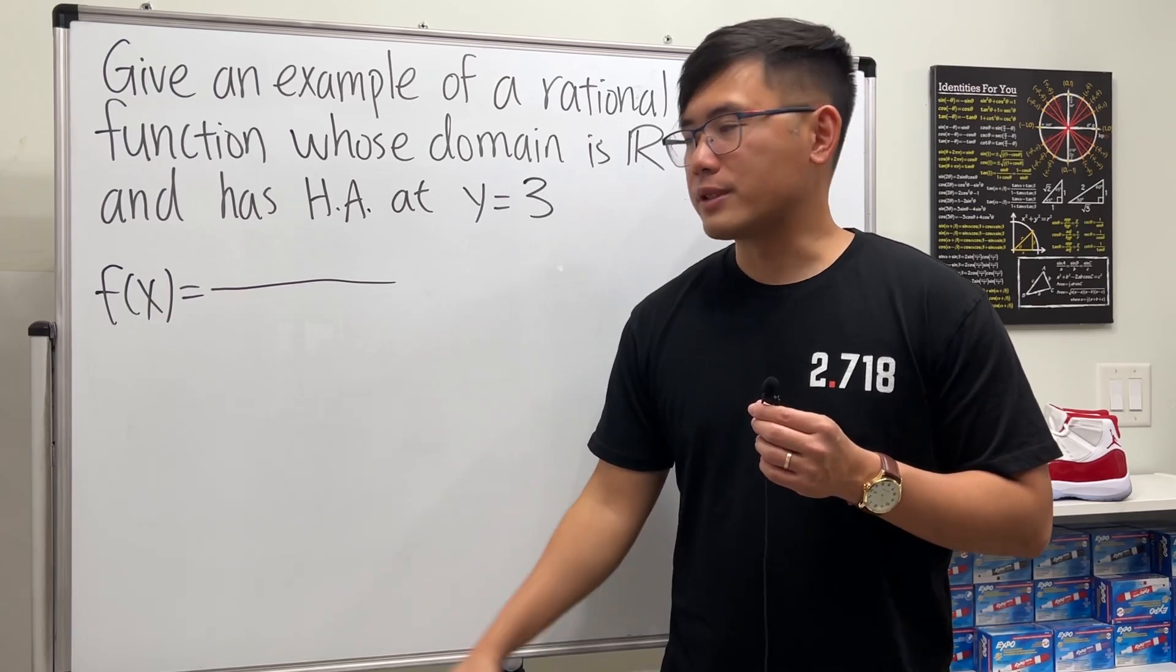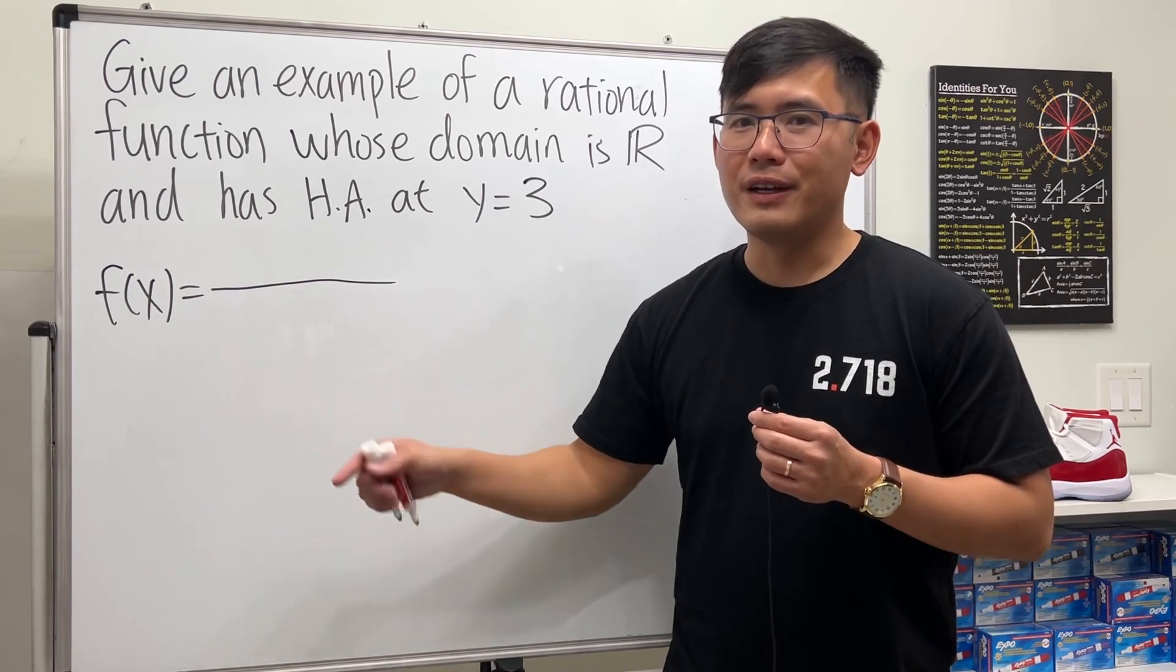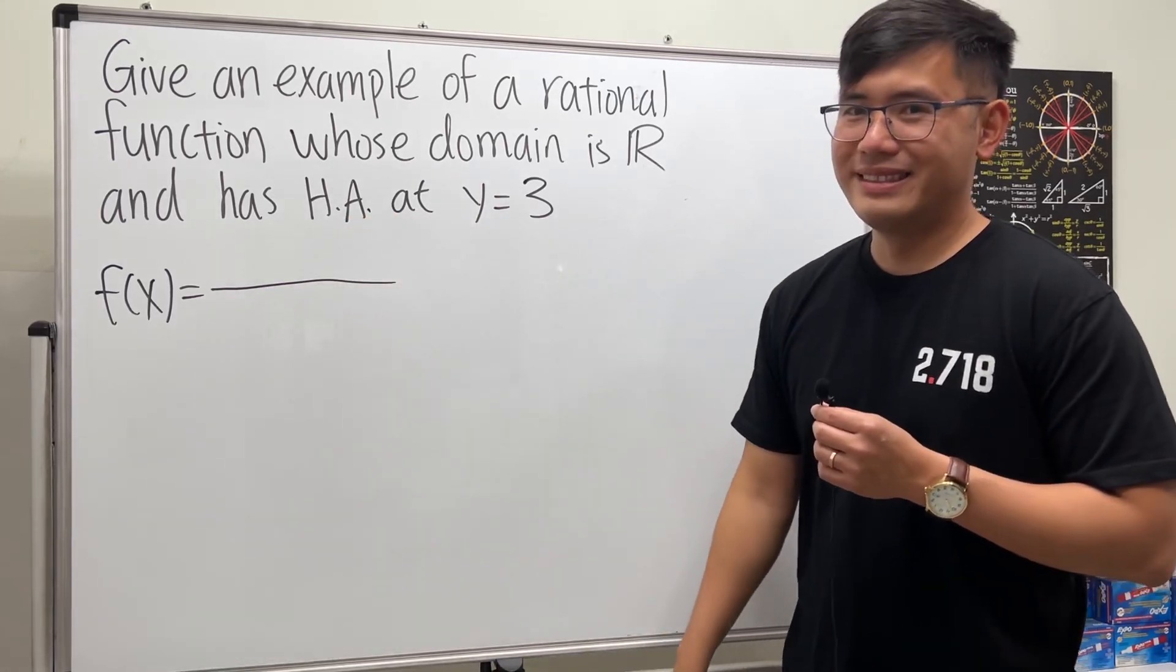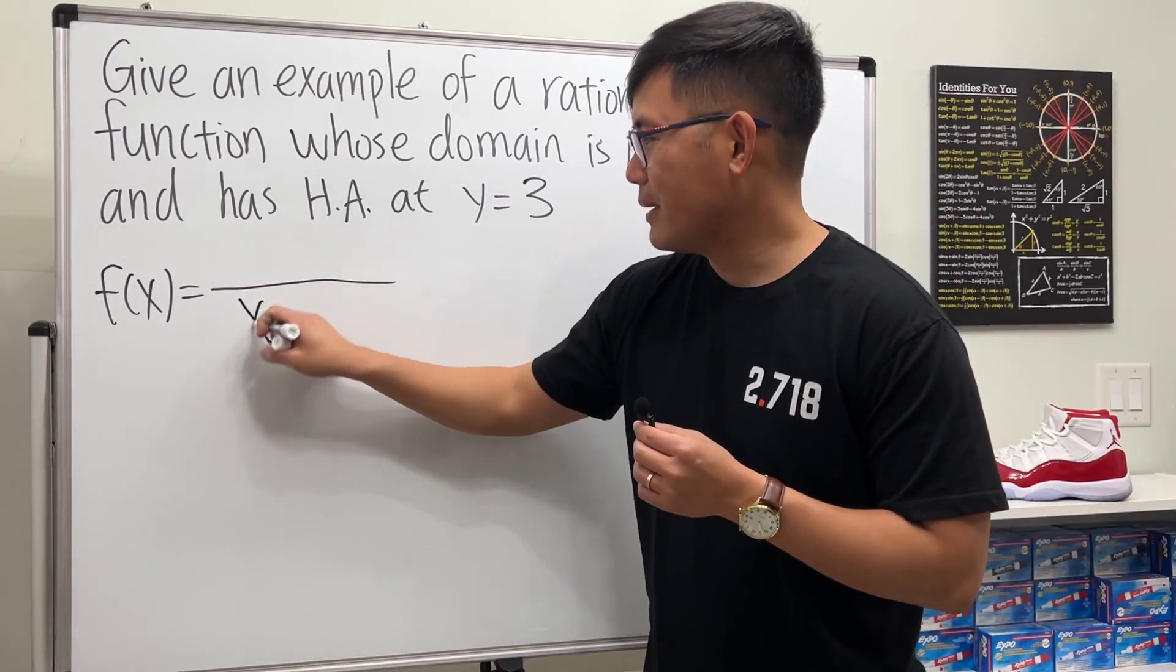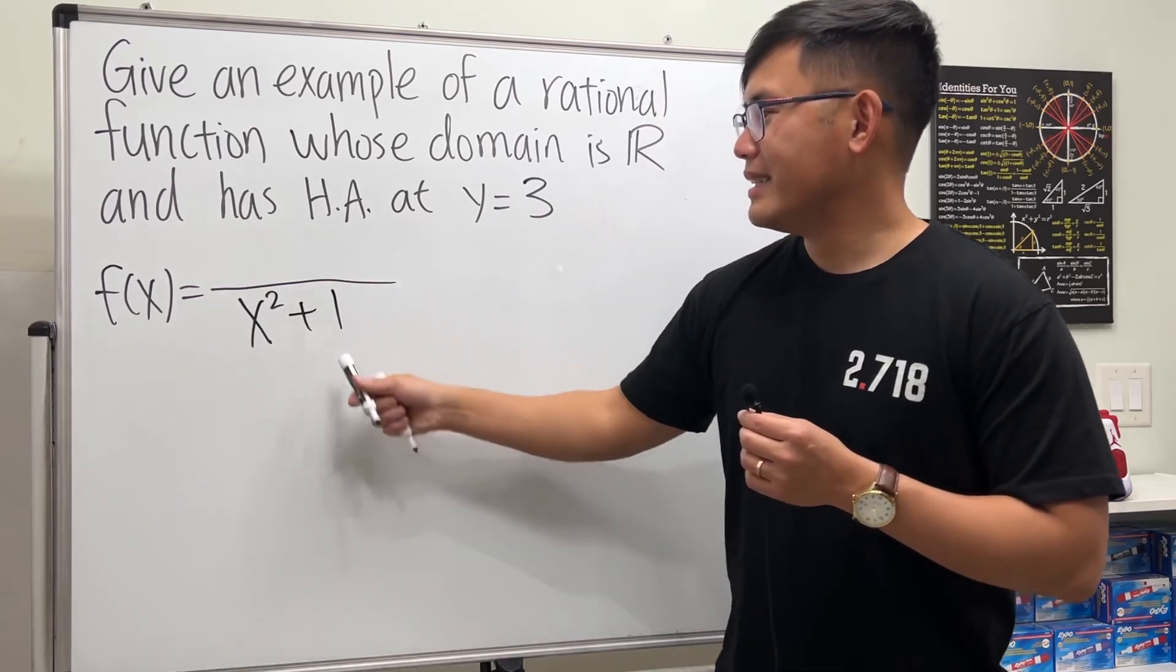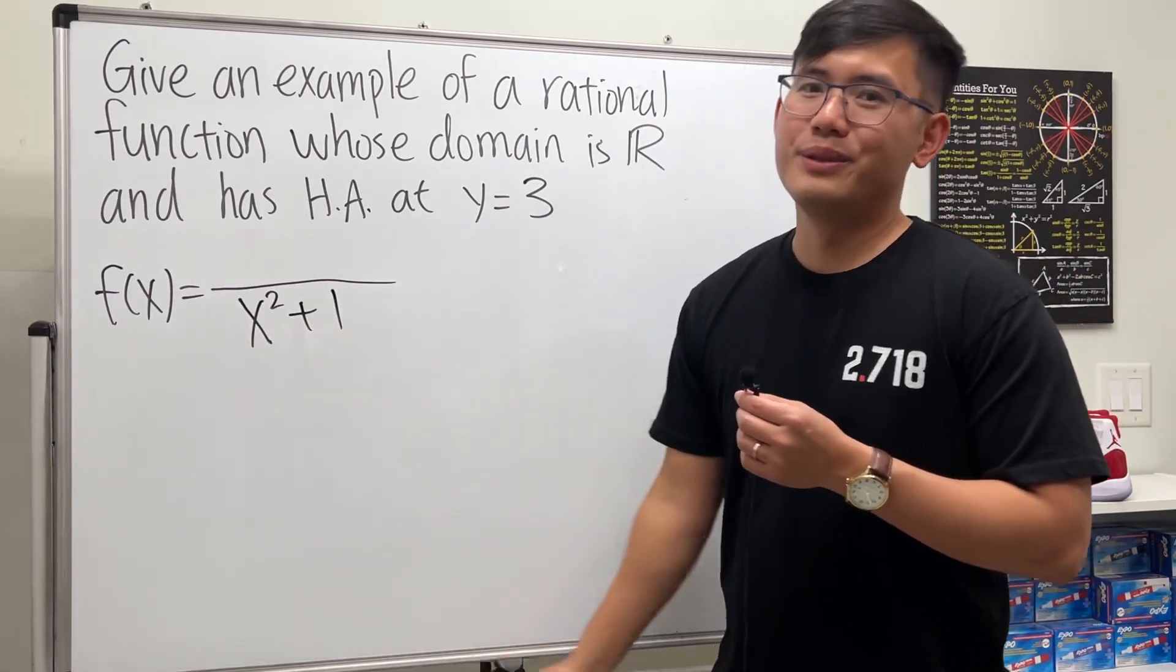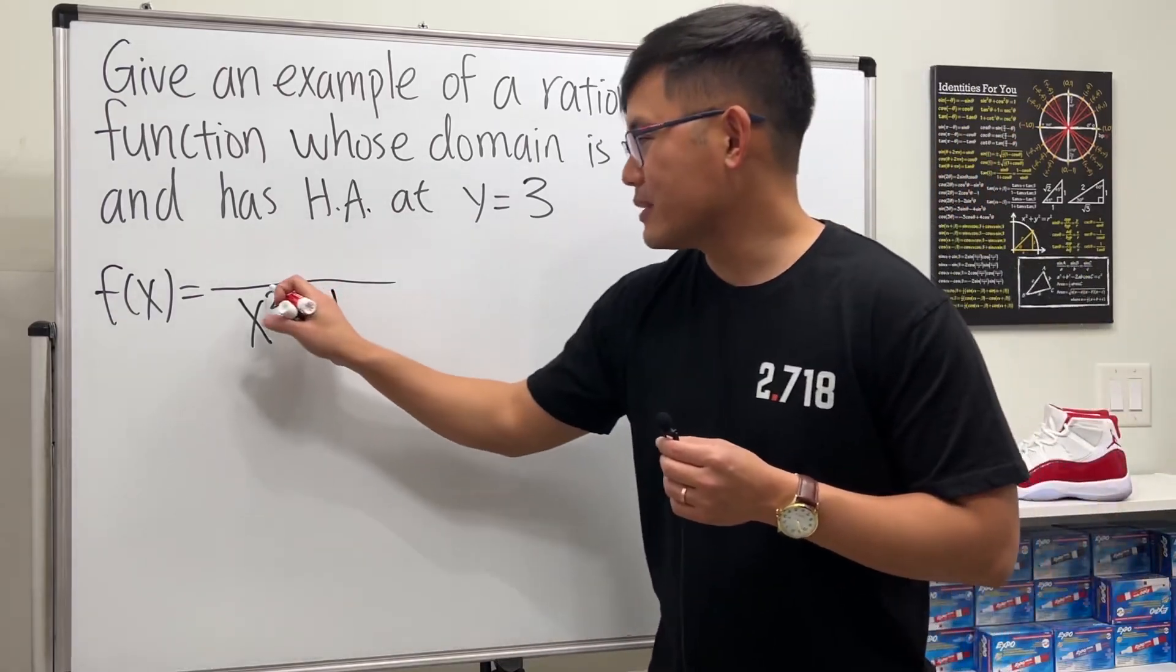What expression can we put right here that's never going to be equal to zero? Don't say 2, or 3, or 5—not just a number. Let's do a quadratic. How about x squared plus 1? This is the famous quadratic expression that has no real zero.